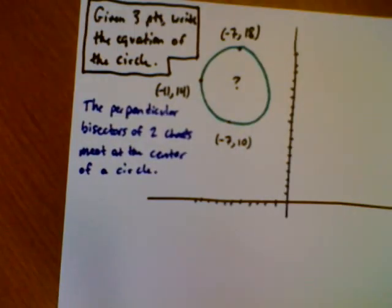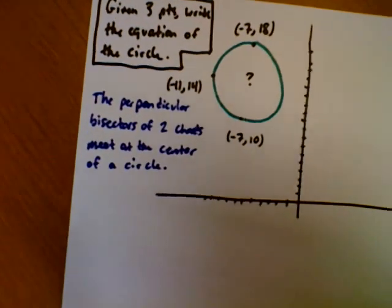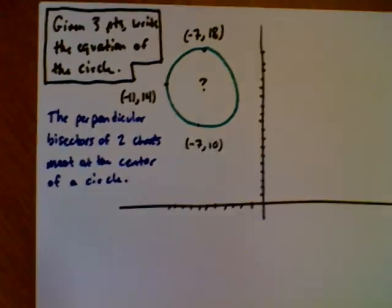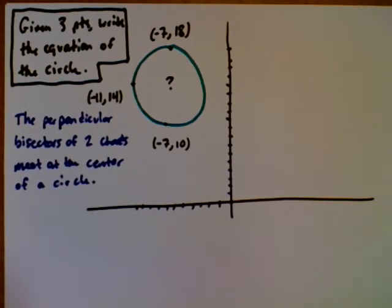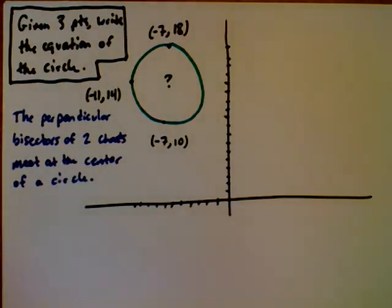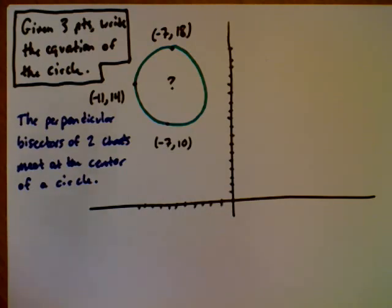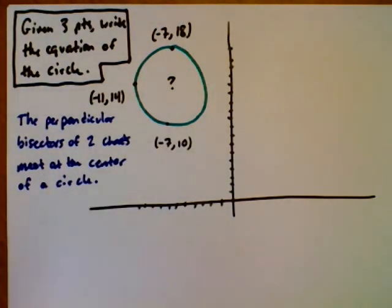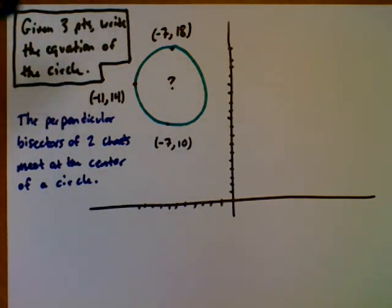We are going to look at how you can find the center of the circle if you're given three of the points. I've drawn a circle here based off of one of the examples from the handouts that I gave you guys. The three points in this circle are negative 7, 18; negative 11, 14; and negative 7, 10.